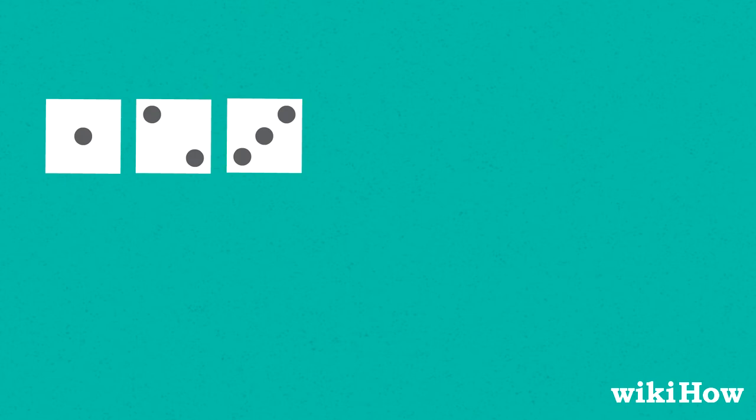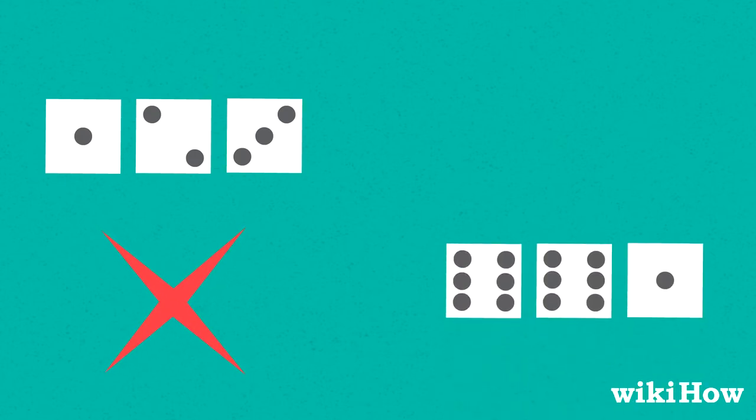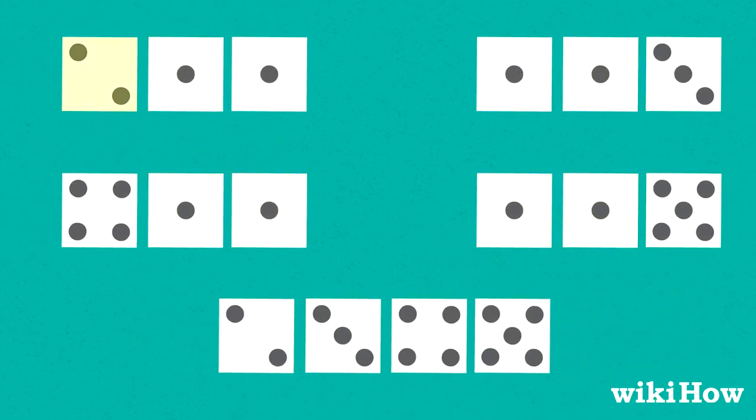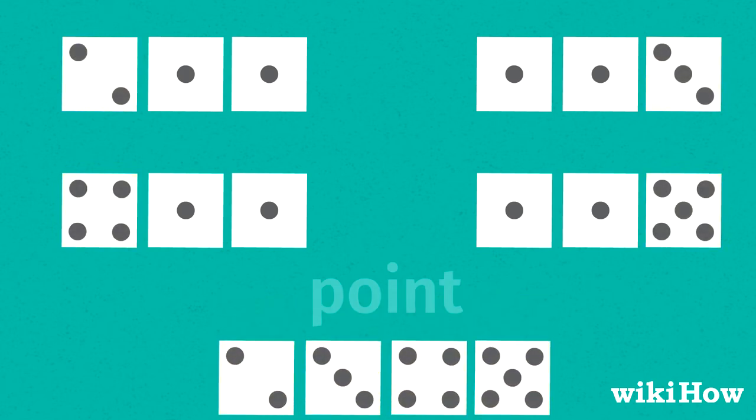If they roll a one, two, and three, or a pair and a one, they automatically lose all of the bets on the table. If they roll a pair and a two, three, four, or five, the non-paired die is now set as their point that the other players must beat.